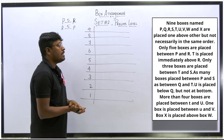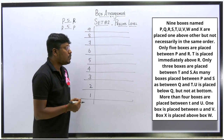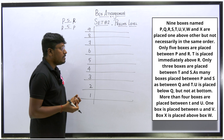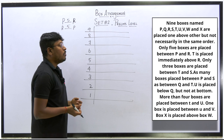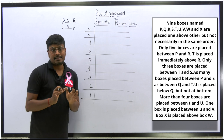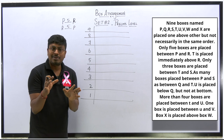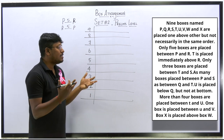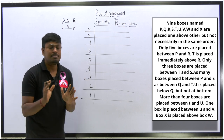Next point: T is placed immediately above R. Only three boxes are placed between T and S. As many boxes are placed between P and S as between Q and T. U is placed below Q but not at the bottom. More than four boxes are placed between T and U. None of these are direct statements — all are indirect — so we should go with possible diagrams.